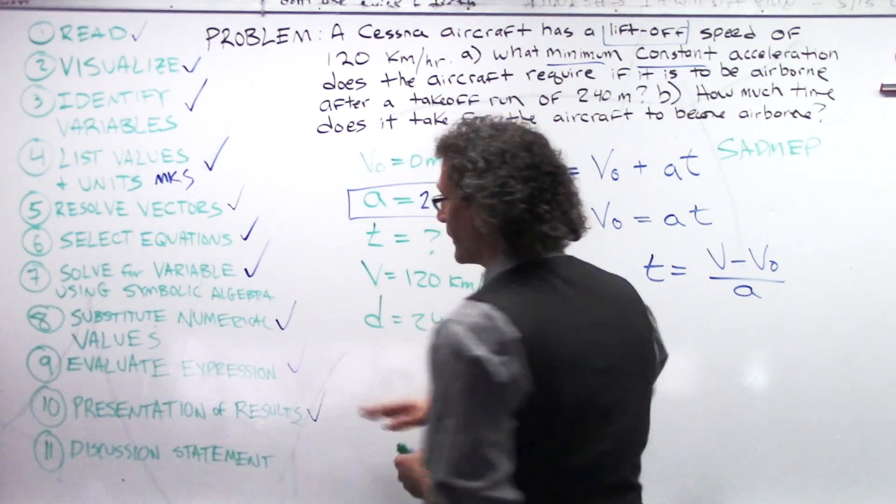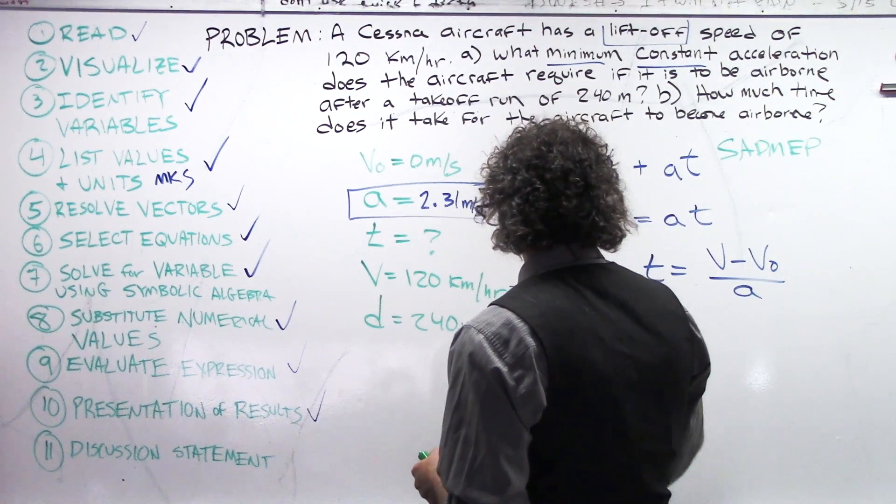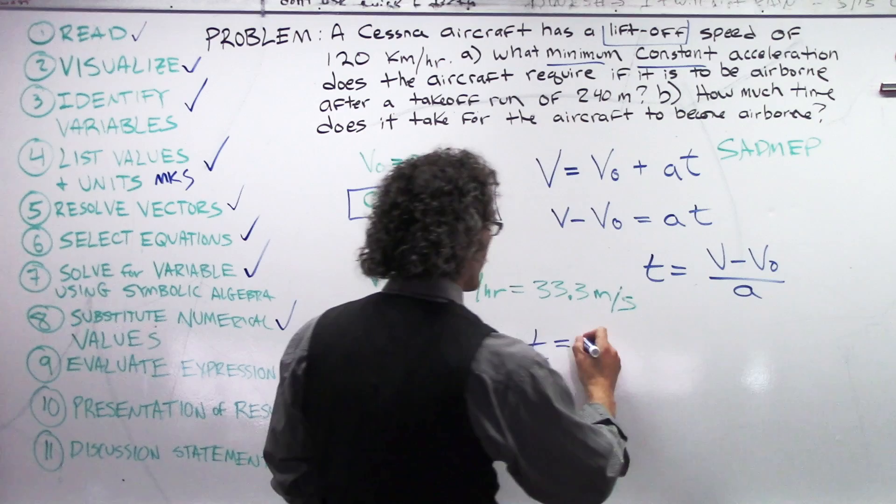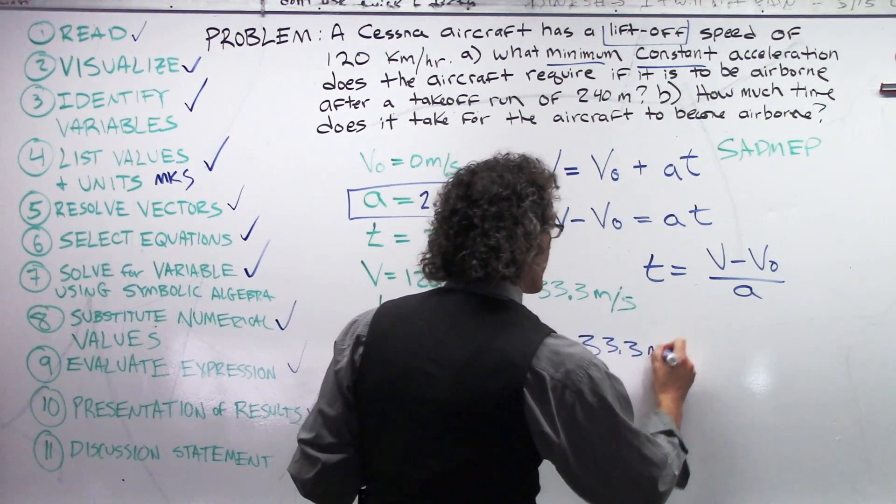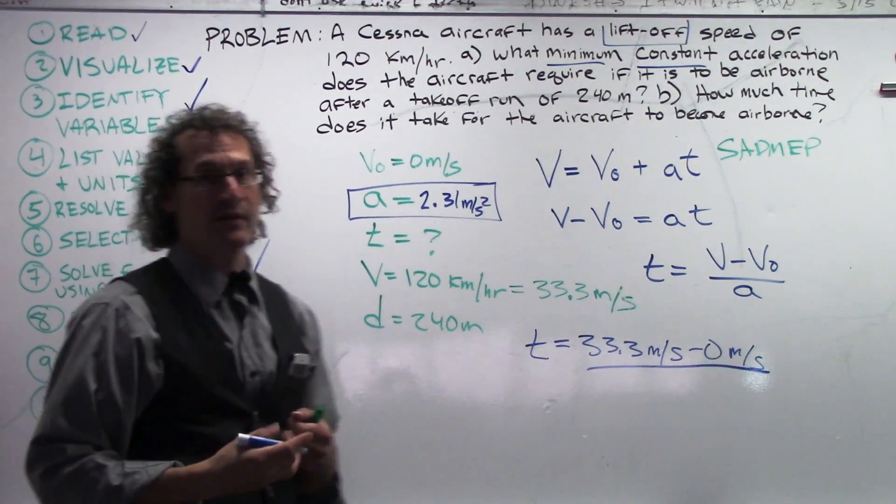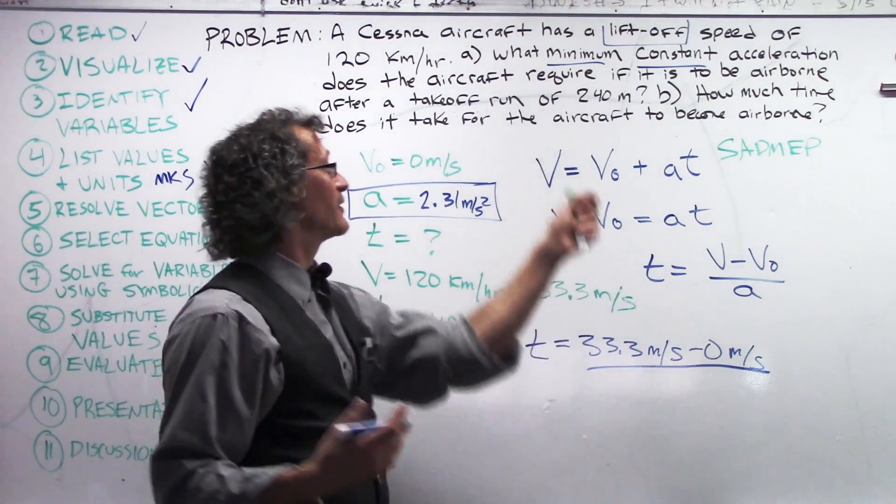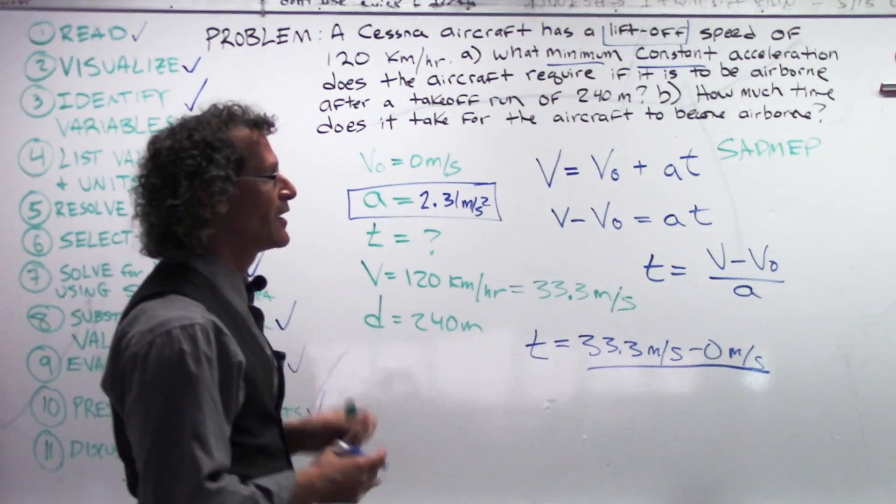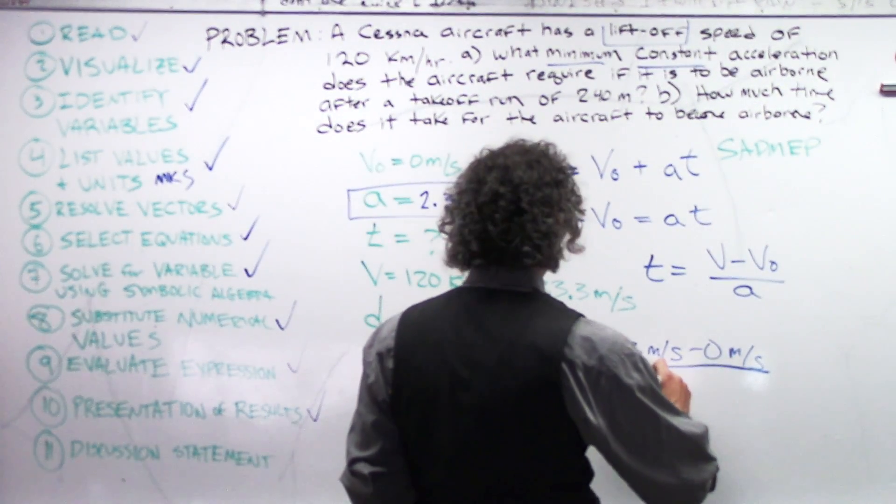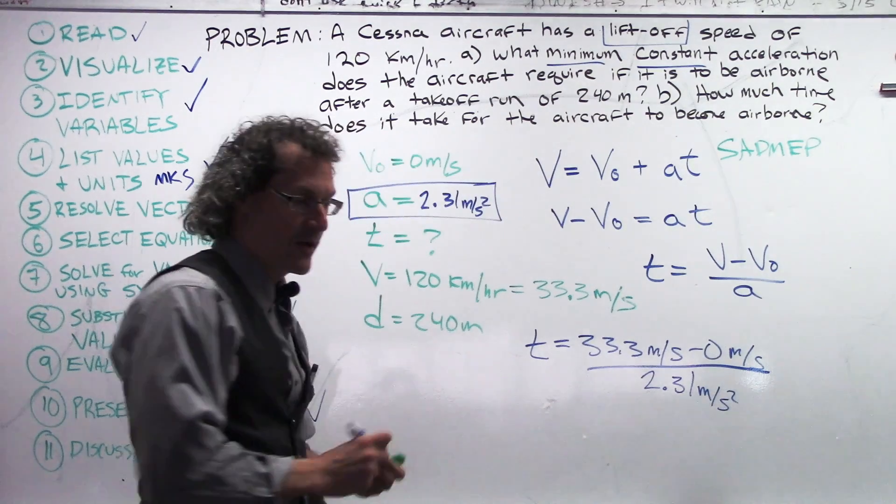Let's now go back. And, since we solved for the variable, we substitute our numerical values in to get T. So, T equals V, which is 33.3 meters per second minus 0 meters per second divided by A, which we found in part A. See, when you find values, feel free to use them in other parts equations. Sometimes that's the only way to go. You have to find part A before you can get part B. And, in this case, we might have been able to get around it. But, I say we use it because we have it. 2.31 meters per second squared.